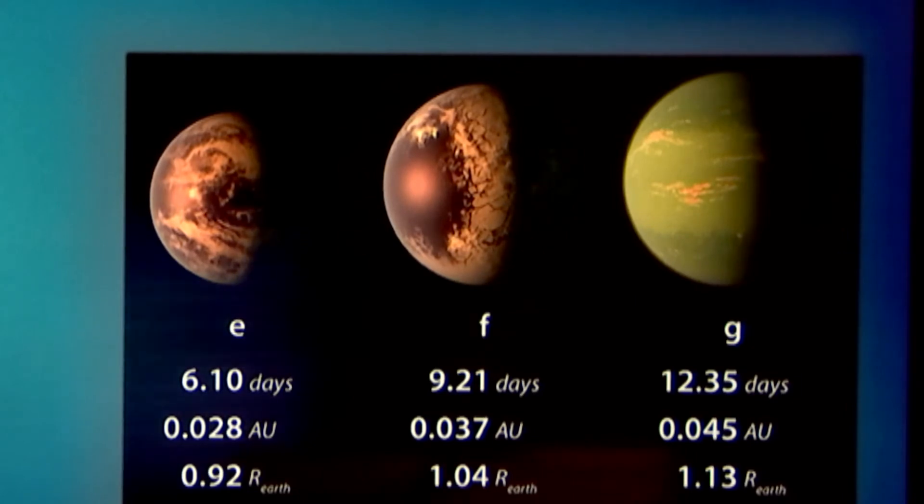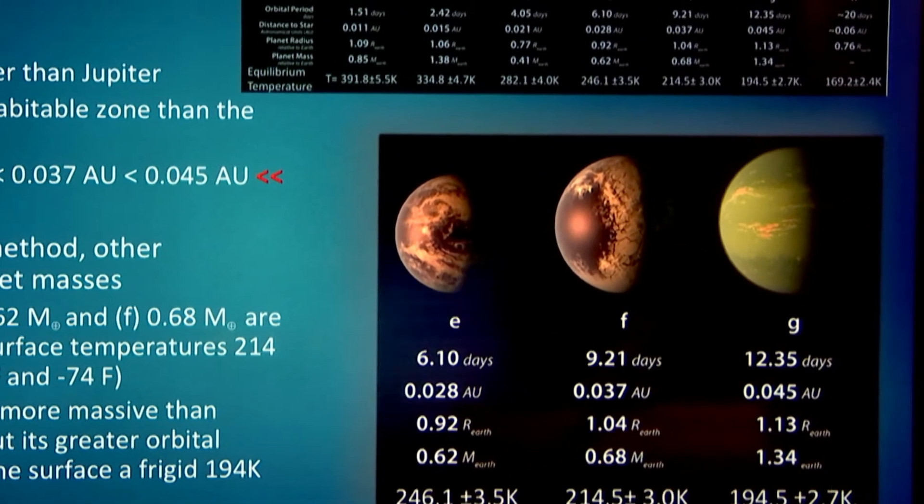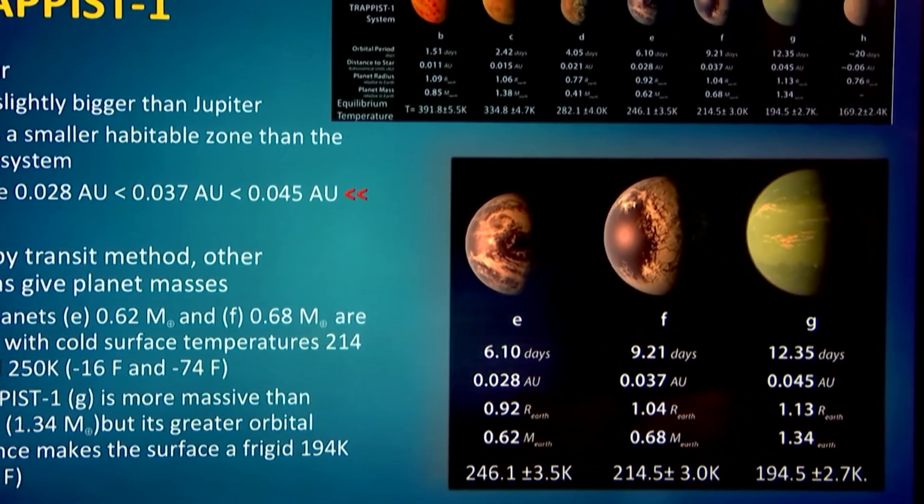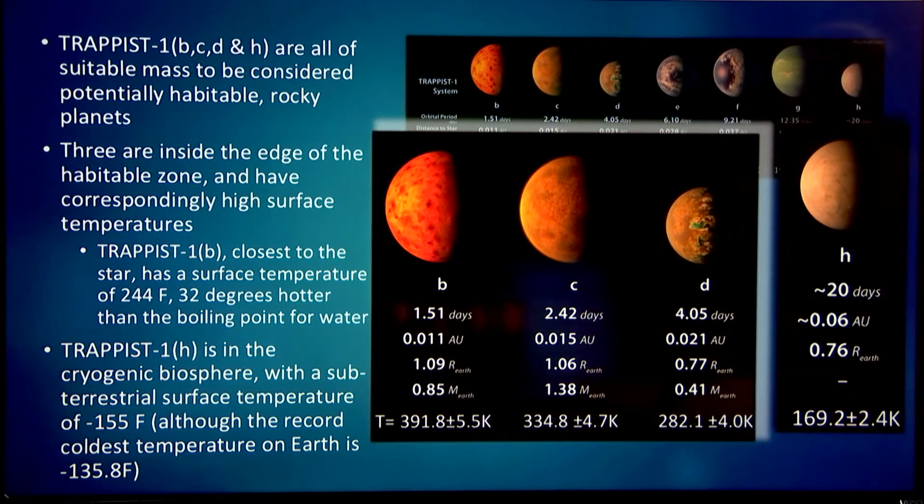The exoplanet G is more massive than the Earth, about one and a third times the mass of the Sun, but its greater orbital distance makes the surface a frigid minus 100 degrees Fahrenheit. So although we have planets that are nominally close to the habitable zone or in the habitable zone, they don't appear to be directly habitable. But B, C, D, and H are all of suitable mass to be considered potentially habitable as well. They're all rocky planets.